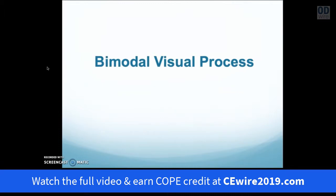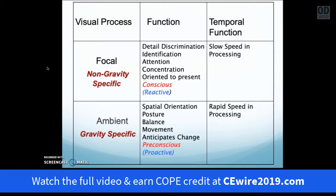Underlying all of this is the fact that Lyme disease affects the brain, and visual processing occurs in the brain. We are going to discuss the bimodal visual process to understand this relationship. Research by Trevarthan in the 20th century and other visual scientists identified two visual processing systems. The focal process is what we use consciously for detailed discrimination, attention, identification, and concentration — it is very much oriented to the present moment and related to higher attention and cognitive processing.